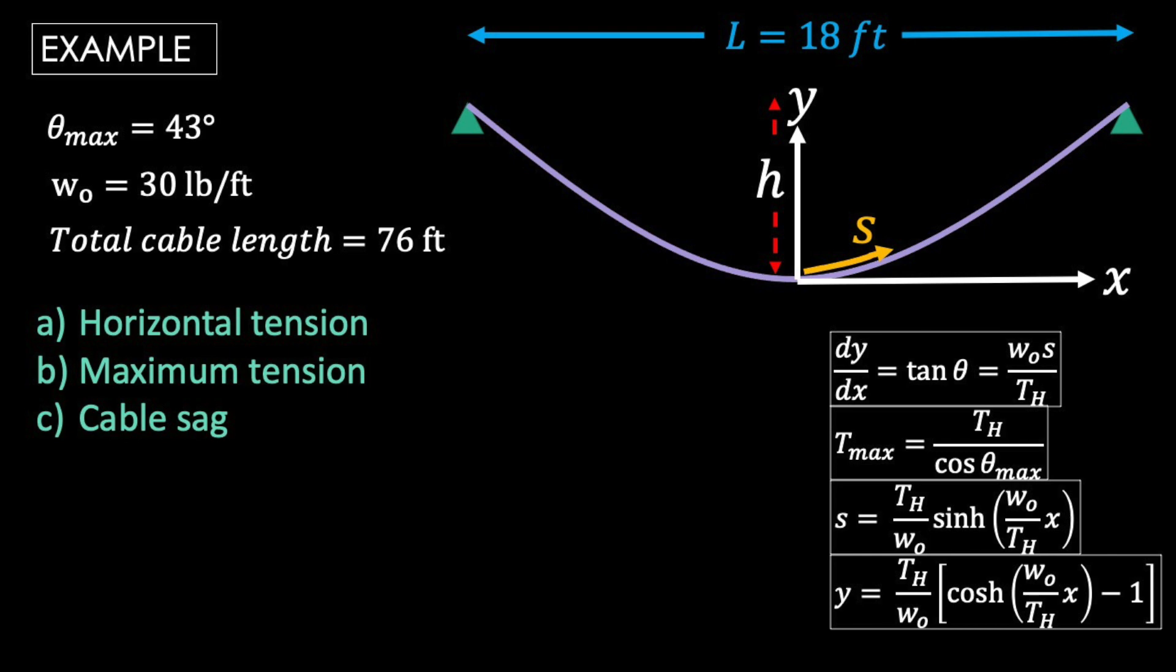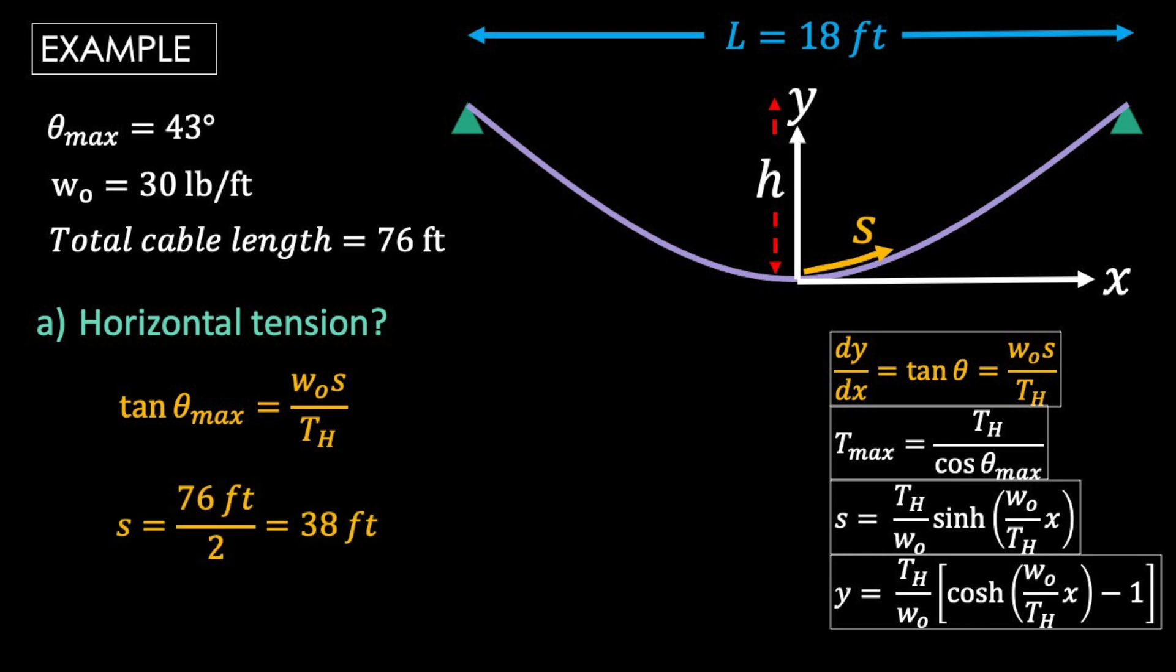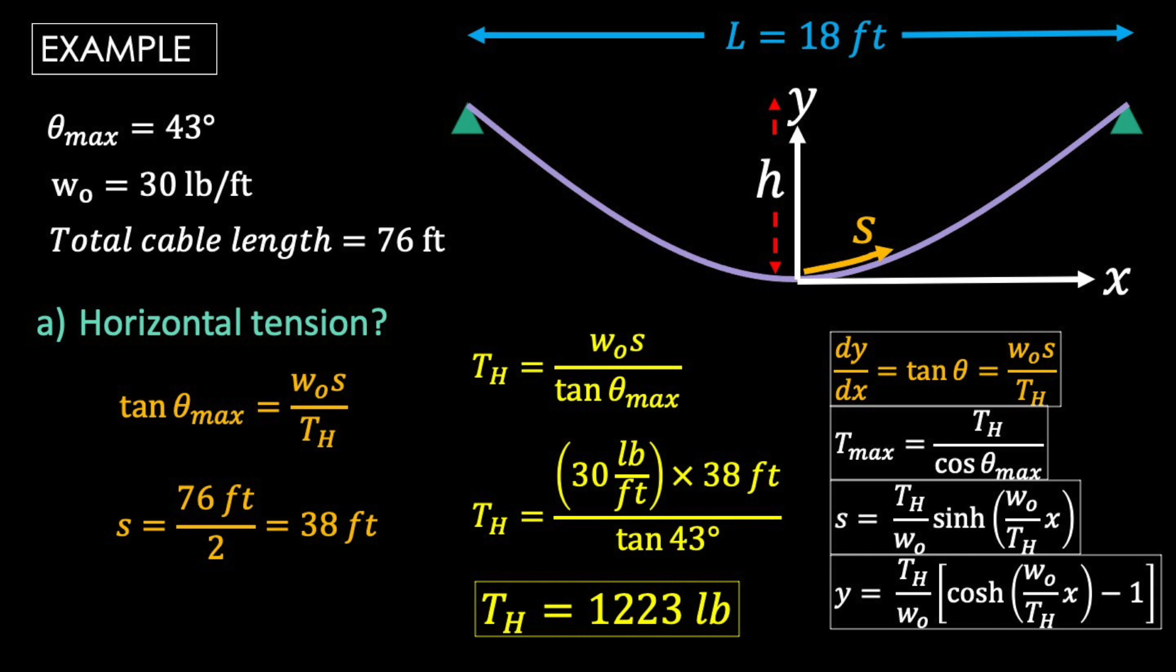In part A, we want to find the horizontal tension. This shows up in literally all of our equations, but only the first one has it as the only unknown. In this equation, we need an angle and a cable length. We know the maximum angle, and we know that that angle occurs at the support. So we need to know the cable length from the origin to the support. That would be half the total cable length. Now we can rearrange and solve for our constant horizontal tension. To the nearest pound, we get 1223.